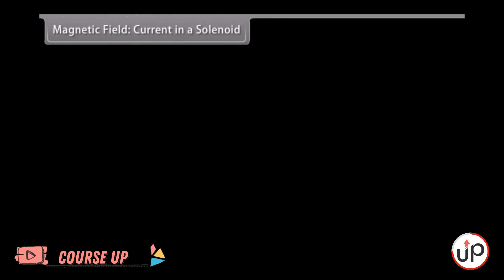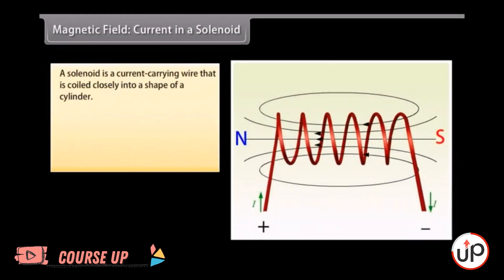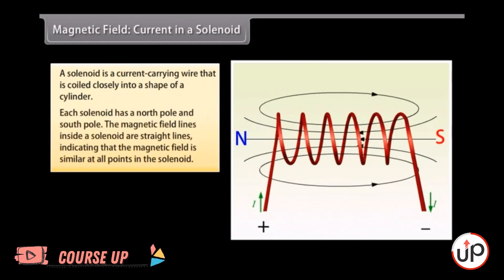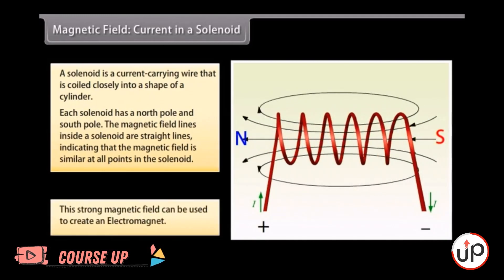Magnetic field current in a solenoid. A solenoid is a current carrying wire that is coiled closely into a shape of a cylinder with the turns as close together as possible. This is similar to a bar magnet. Each solenoid has a north pole and south pole. The magnetic field lines inside a solenoid are straight lines and indicate that the magnetic field is similar at all points in the solenoid. This strong magnetic field in the solenoid can be used to magnetize magnetic materials. This type of magnet is called an electromagnet.